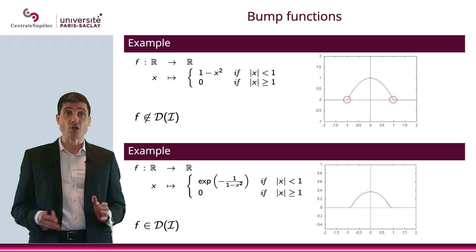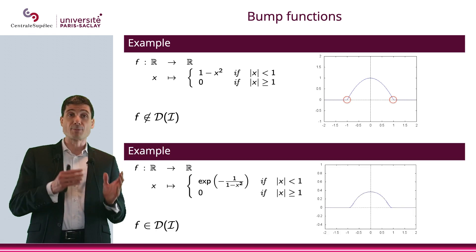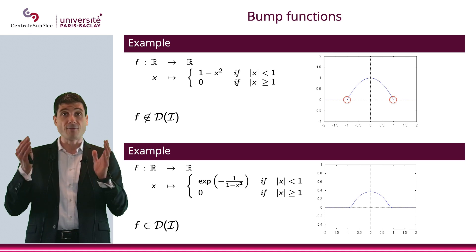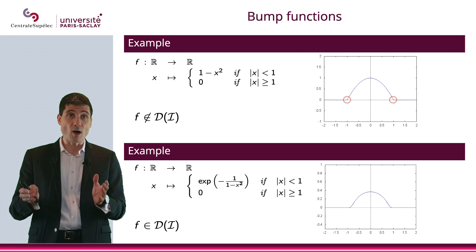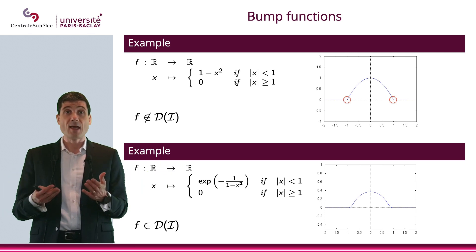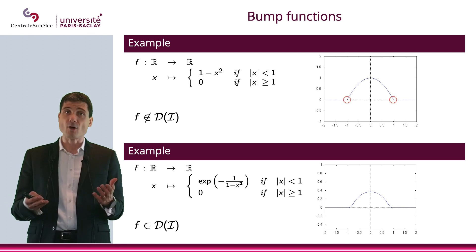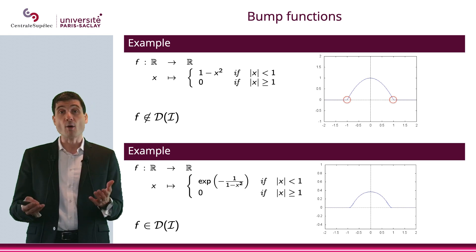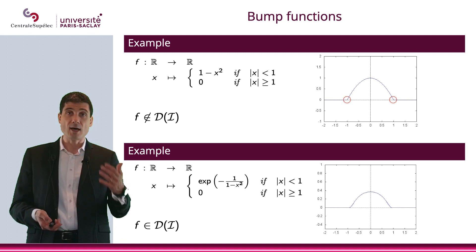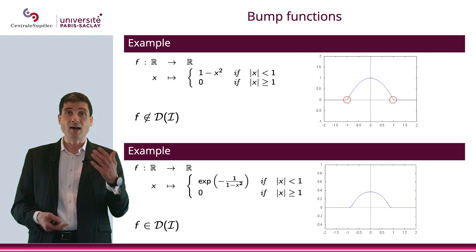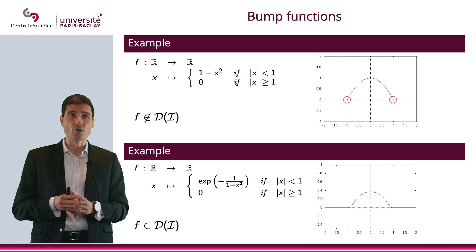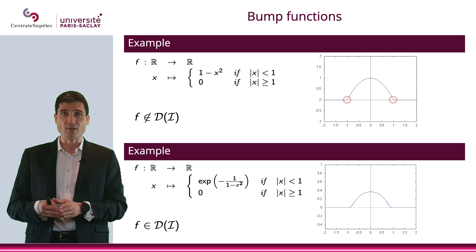However, this function — if you look at exp(-1/(1-x²)) when the absolute value of x is strictly smaller than 1, and 0 outside — that will be a function which is with compact support and also C∞. If it's not clear, you can post a video and try to understand why, and possibly go to the references if you still don't understand why that is a bump function.